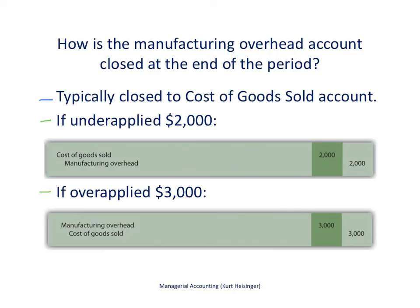The manufacturing overhead account must be closed out at the end of the period. The typical approach is to move whatever dollar amount remains in the overhead account to the Cost of Goods Sold account — assuming the amount is relatively insignificant, or immaterial. If the amount is material, a more sophisticated closing method is needed. There are two scenarios: the overhead account is underapplied, or it is overapplied.